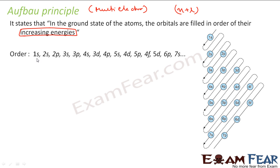For 1s, n is 1 and l is 0, so n plus l is 1. For 2s, n is 2 and l is 0, so n plus l is 2. For 2p, n is 2 and l is 1, giving 3. For 3s, n is 3 and l is 0, also giving 3 — but since the lower value of n is filled first, 2p comes before 3s. This is how we arrange orbitals in increasing energy order.